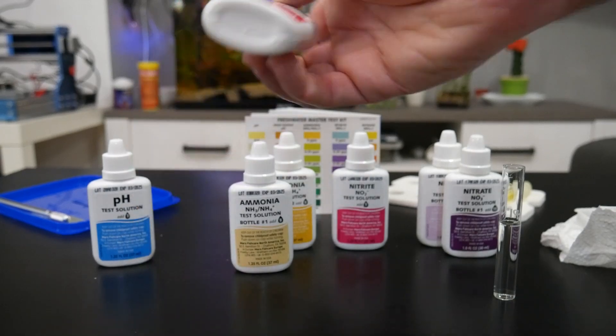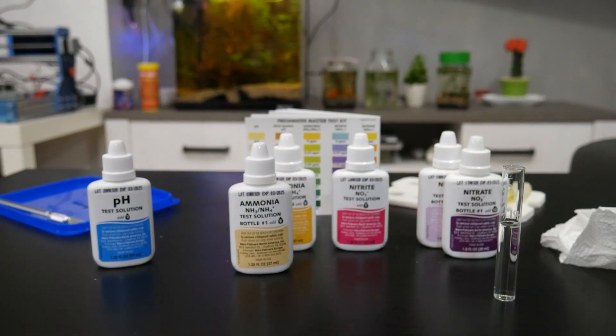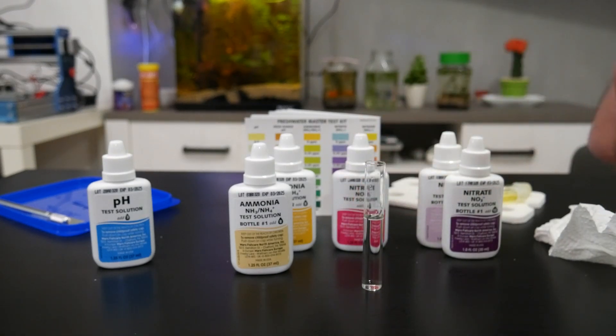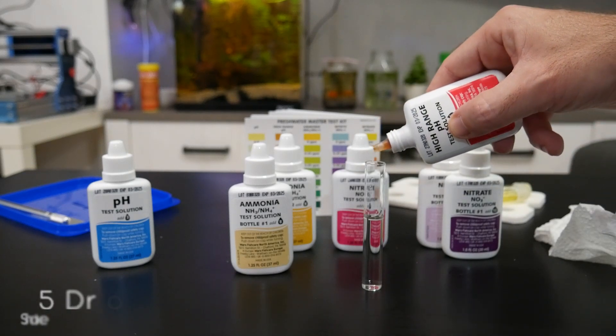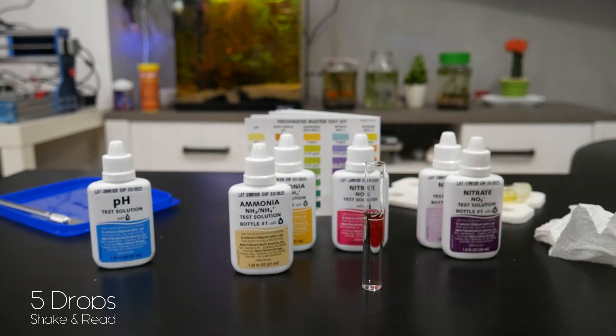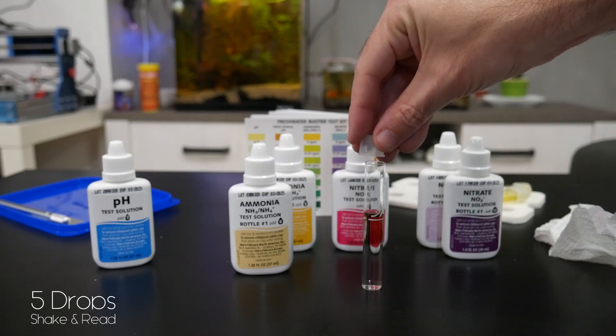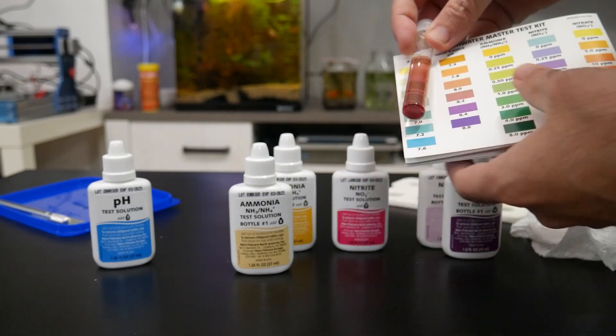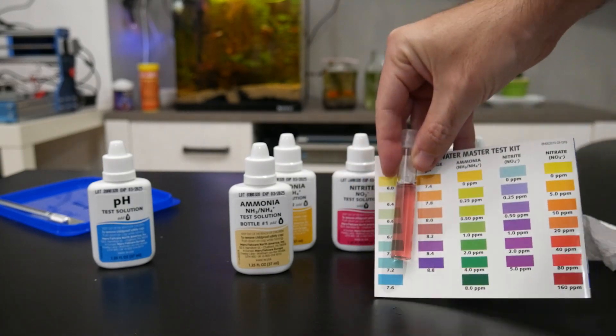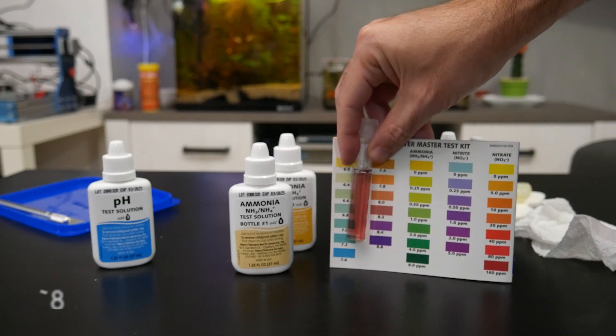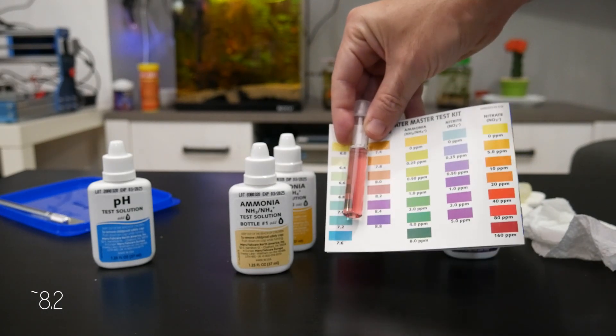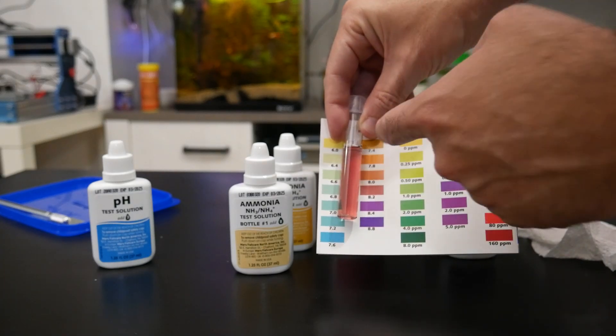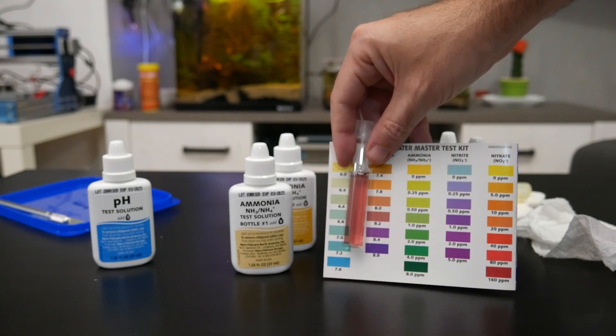Now we will test the high range pH. We need five drops from this bottle and we can read it immediately after the test. If we check the table, we can see that the value is between 8 and 8.2. The value is quite high, but if the fish are happy, this value is okay.